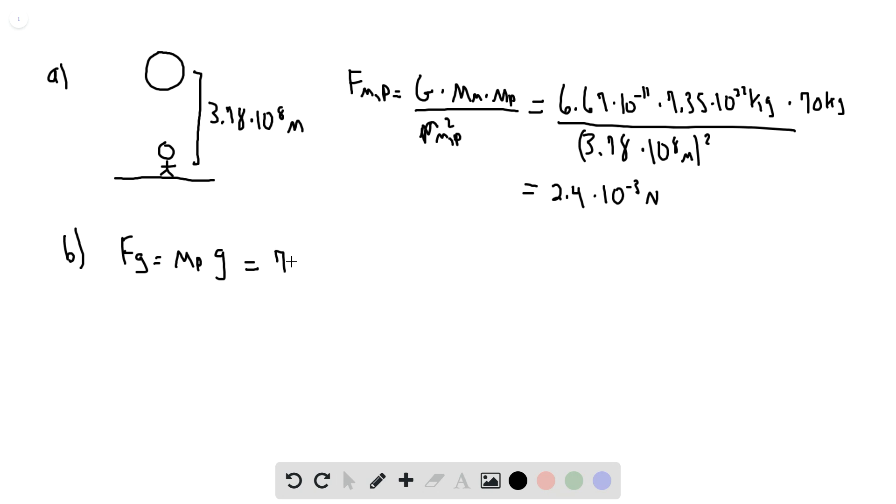So we plug in our values, so 70 kilograms again for the person, and 9.8 meters per second squared for gravitational acceleration. And we should get that that is 690 newtons. So that's the force from Earth.